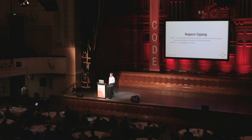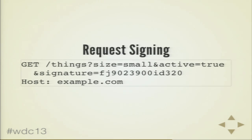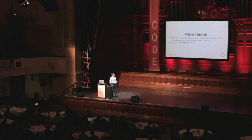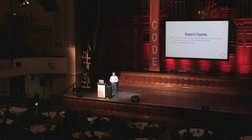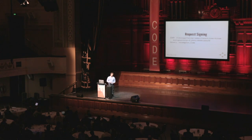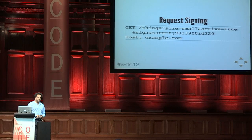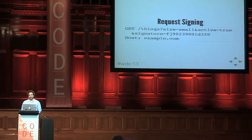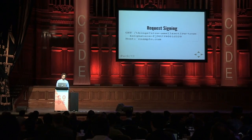Request signing was the antidote to that. Instead of actually sending the password, you do some magic mathematical checksum hash formula based on the URL. No one could possibly guess that randomly, and then the server verifies that only someone who had the password could have created that signature correctly. Amazon's a big fan of this with some of their services. But it's probably more complex than it needs to be now.